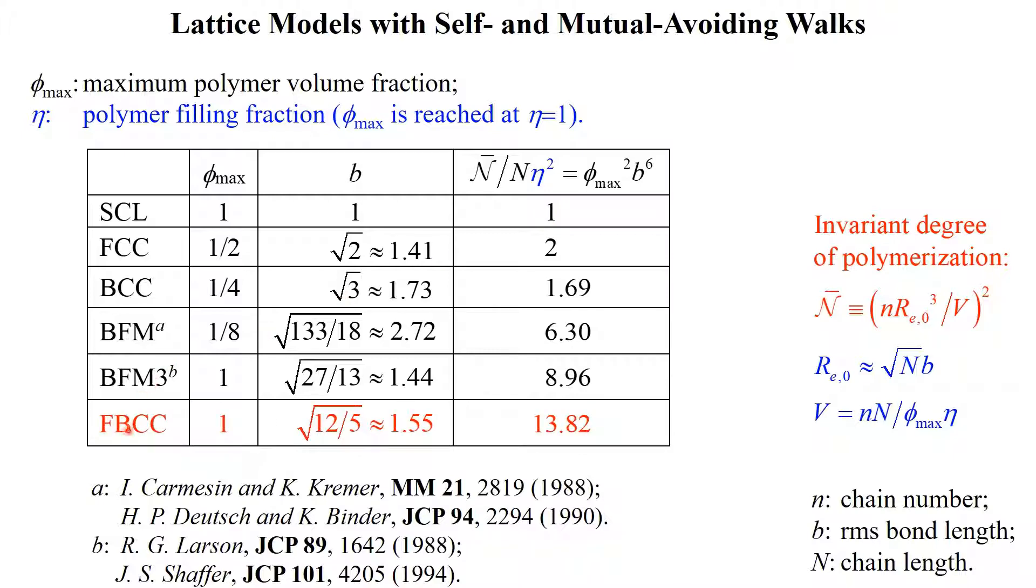The FBCC model gives an n-bar value more than 50% larger than BFM3. Because the number of chains n in the simulation box needs to be proportional to the square root of chain length in order to reduce the effects of periodic boundary conditions, our model is about twice as efficient as BFM3 and much more efficient than other lattice models listed here.